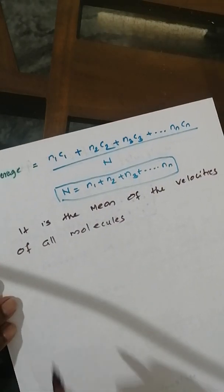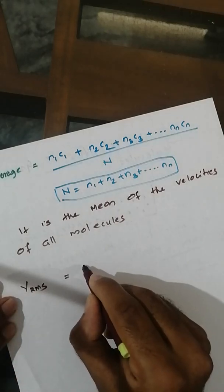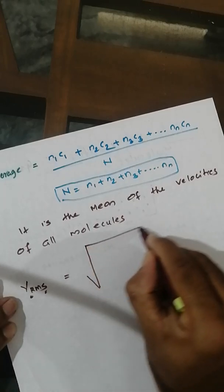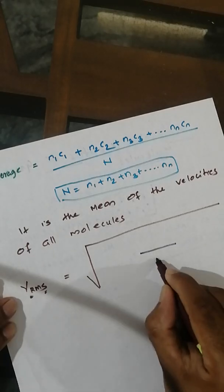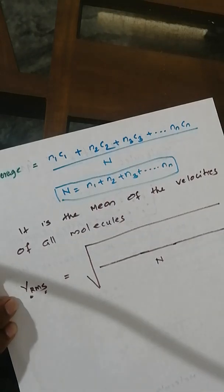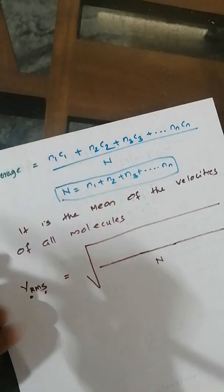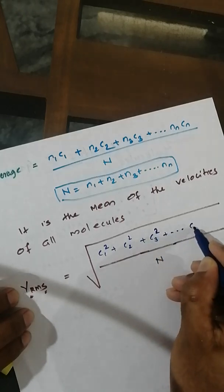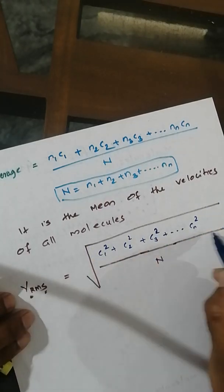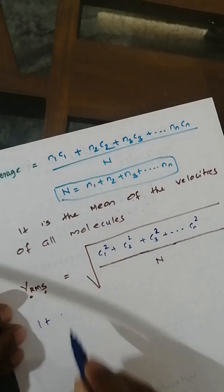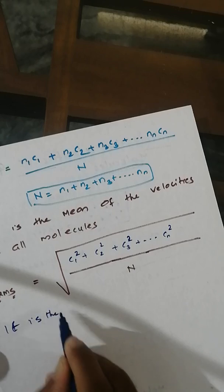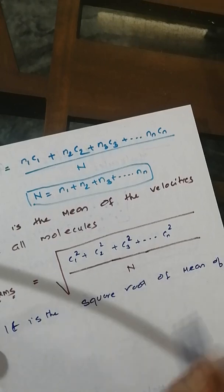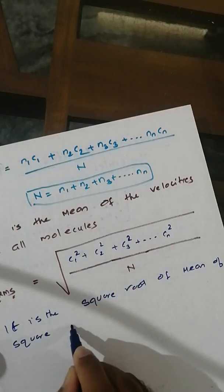Now what is V-rms? V-rms stands for root mean square velocity. You take the square root of the mean of the squares of velocities. That is: the square root of (c1² + c2² + c3² + ... + cn²) divided by total number N. It is the square root of the mean of the squares of velocities.